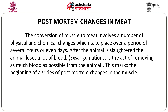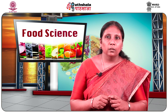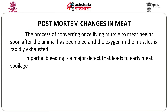The conversion of muscle to meat involves a number of physical and chemical changes which take place over a period of several hours or even several days. After the animal is slaughtered, the animal loses a lot of blood and bleeds to death. This process is referred to as exsanguination — the act of removing as much blood as possible from the animal. When the animal completely bleeds to death, this marks the beginning of a series of post-mortem changes in the muscle. Post-mortem changes in meat can be defined as the process of converting the living muscle into meat soon after the animal is slaughtered.